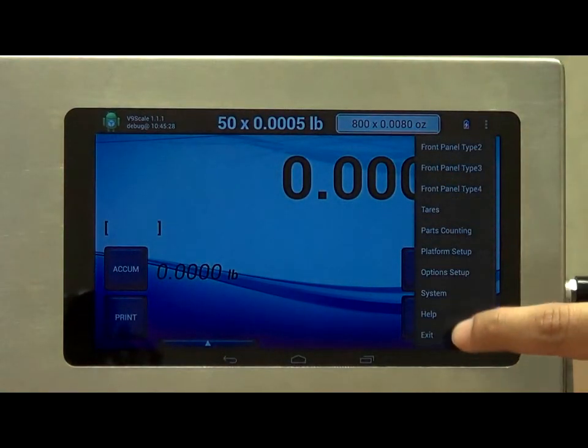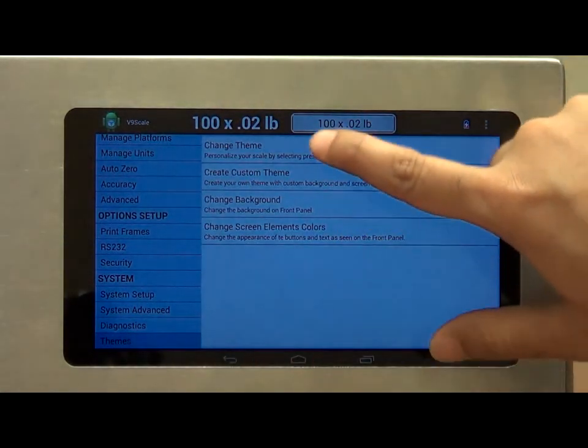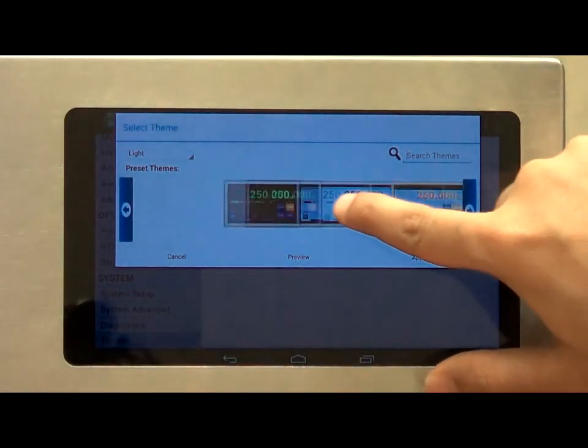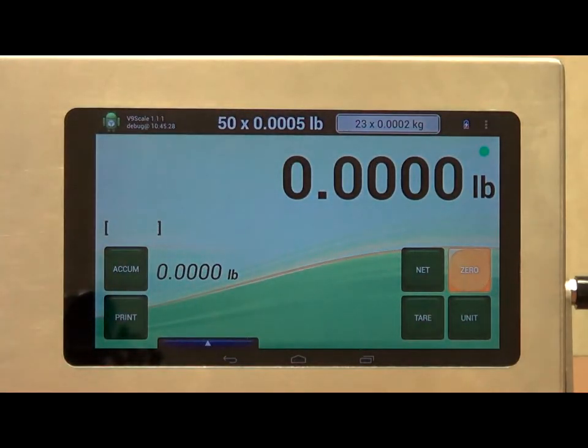I can change this to something else, such as a green background. This gives you the ability not only to use our preset themes, but it can also give you the ability to change whatever background you wish, whatever color you wish for the text as well as the buttons. So it's fully customizable for your specifications.